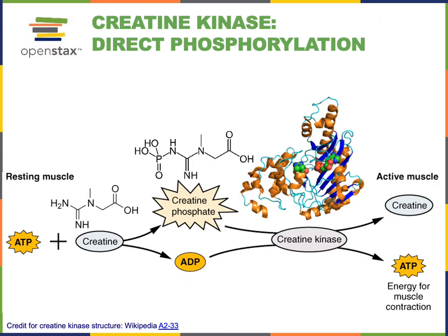Direct phosphorylation provides a rapid source of ATP to fuel muscle contraction. In the mechanism of direct phosphorylation, the enzyme creatine kinase transfers a high-energy phosphate from the molecule creatine phosphate onto a molecule of adenosine diphosphate in order to form ATP. This mechanism provides enough energy to fuel contraction for a short amount of time, around 10 to 15 seconds.